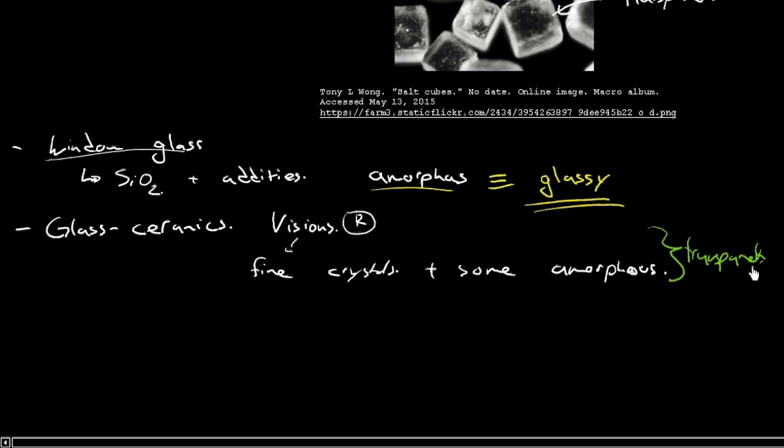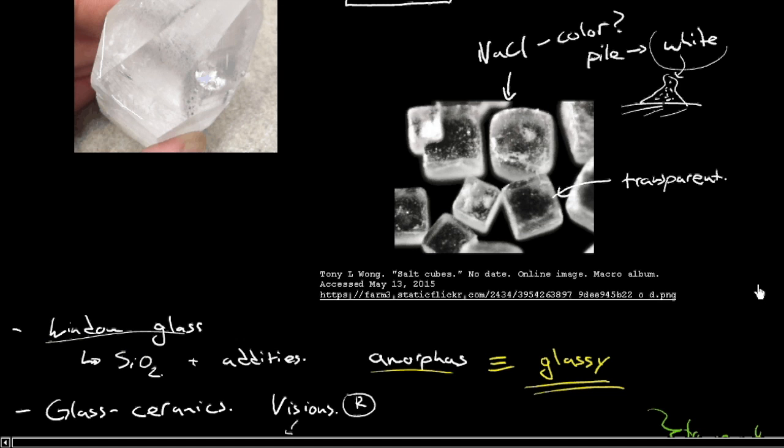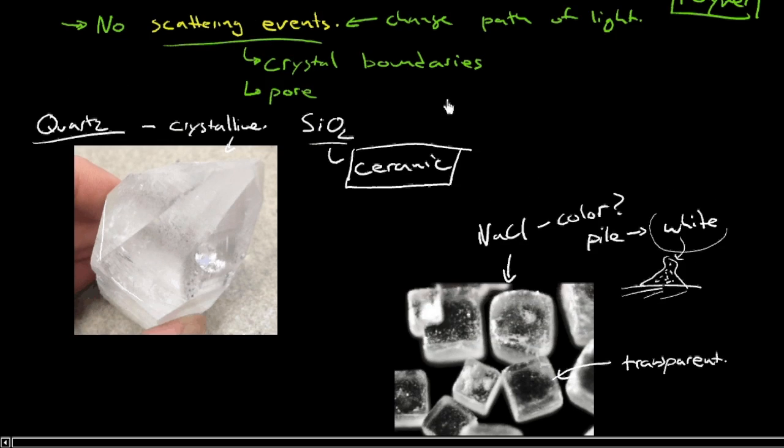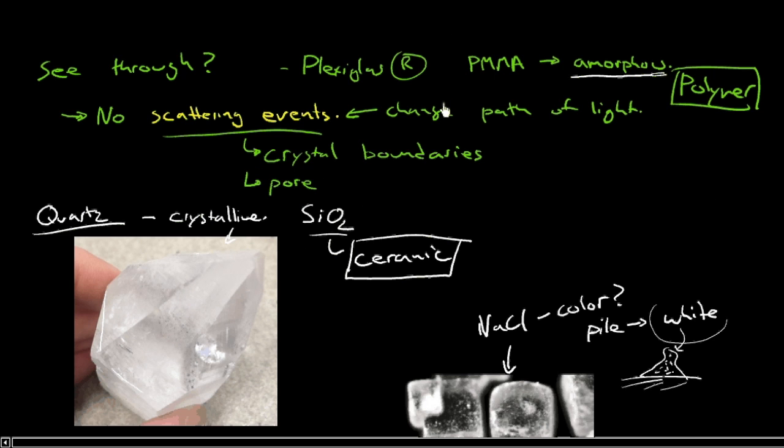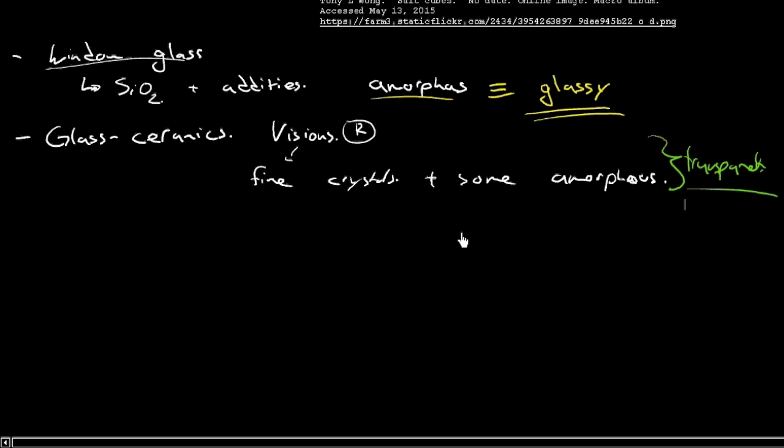So we don't yet have a very good grasp of what the requirement is for transparency. We have some requirements. Certainly, no scattering events. But there's got to be more to it. And what I also want to explore is, well, look, we have polymers. We have ceramics. Well, have you ever seen a transparent metal? Have you ever seen a transparent metal?